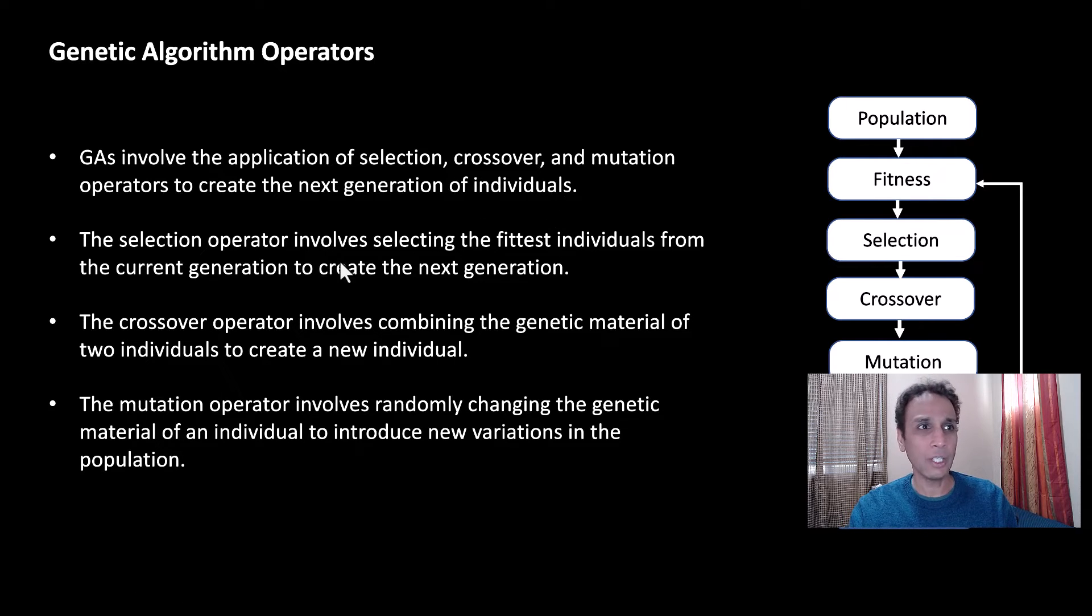They involve the selection, crossover, and mutation process. And the selection operator involves selecting the fittest individuals. Again, you need criteria. Under what criteria are we calling them fittest? Is it body mass index? That can be a criteria, that is an objective function. So you need to define a function that quantifies what fit means in this case.